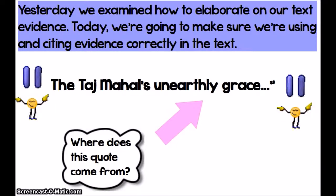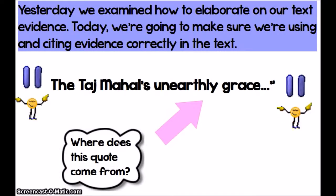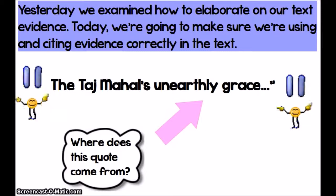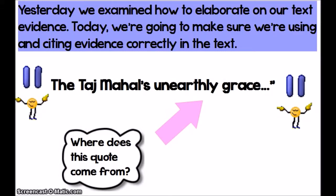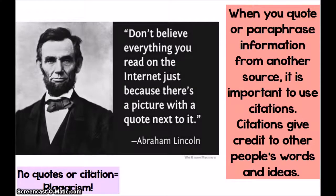So let's say we're looking to use the following quote from Jeffrey Bartholet's 'How to Save the Taj Mahal.' We want to quote the part where he says 'the Taj Mahal's unearthly grace.' Now your reader is going to want to know where this quote comes from. If you look at the quote the way that I have it on the screen, you can't really tell the author's name, the name of the article, or where exactly within the article you would be able to find this original quote. What's missing from this is the citation.